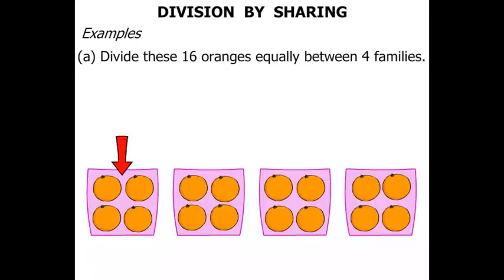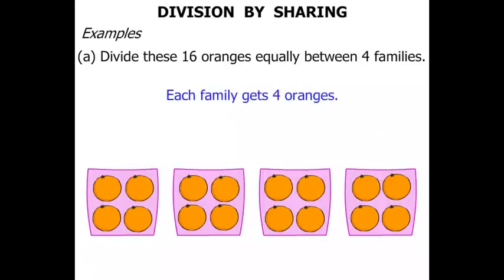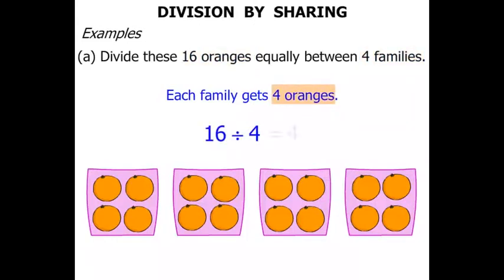Now we can see in the first basket there are 4 oranges, in the next also 4 oranges, then 4 oranges there and 4 oranges there. In other words, each family gets 4 oranges. So we can say that 16 oranges split up between 4 families — we can write that as 16 divided by 4, and the answer equals 4.